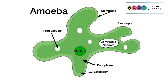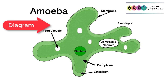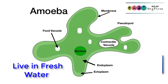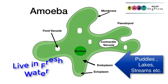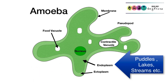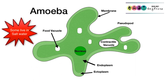It's important that you can draw and label a diagram of this unicellular organism. Amoebas generally live in freshwater — in puddles, lakes, rivers, streams, anywhere where there's freshwater. But be aware that there are saltwater varieties as well.